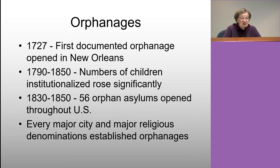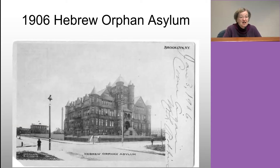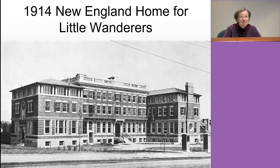During that period of industrialization, illegitimacy soared and the numbers of children in institutions rose significantly. Fifty-six orphan asylums had opened throughout the United States, and virtually every major city or major religious denomination had established orphanages. Here is the Hebrew Orphan Asylum in Brooklyn, New York, as late as 1906. In New England, we have the Home for Little Wanderers — a humorous name for a dire situation.